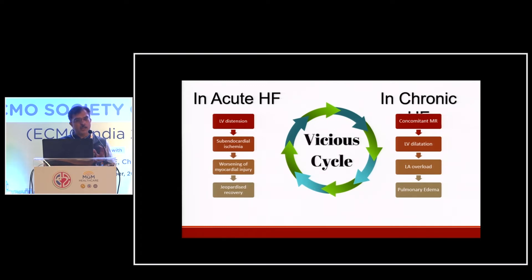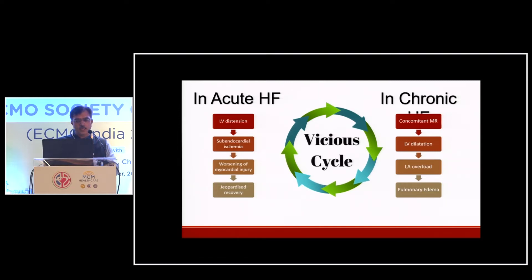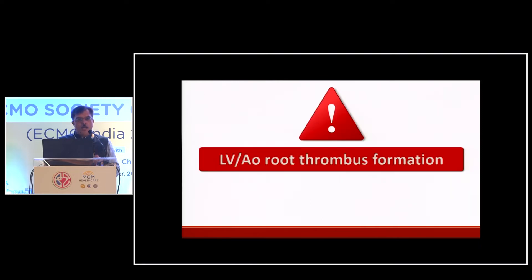If we do not break this vicious cycle the purpose of placing VA ECMO is defeated. In acute cardiogenic shock, LV distension leads to subendocardial ischemia, worsening myocardial injury and jeopardizing recovery. In acutely decompensated chronic heart failure, concomitant mitral regurgitation worsens, causing further LV dilatation and pulmonary edema. In worst situations, when the aortic valve does not open, blood stasis in the LV and aortic root can lead to thrombus formation and embolic complications in the coronaries, brain or peripheral circulation.